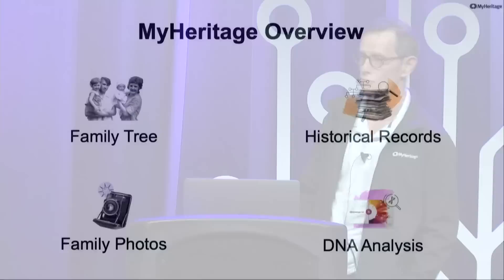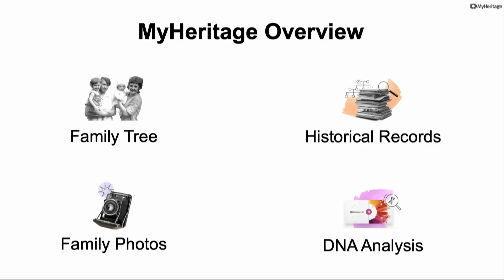So MyHeritage does a lot of things. At a very high level, we have a family tree where you can build and record your family history, and we're going to talk about that today. We also have a lot of features around family photos, like the AI Time Machine. There are lots of historical records where you can search censuses, newspapers, and so on, and how they connect to the family tree using matches. And we have, of course, DNA — we do a DNA analysis and give you a lot of information regarding that.